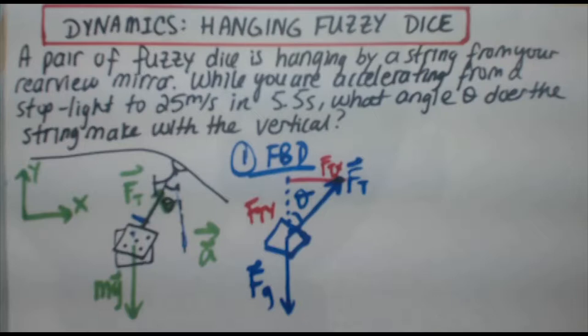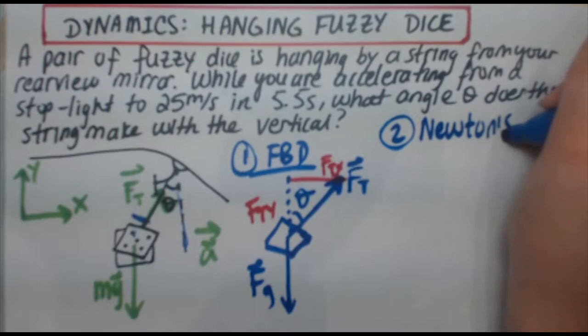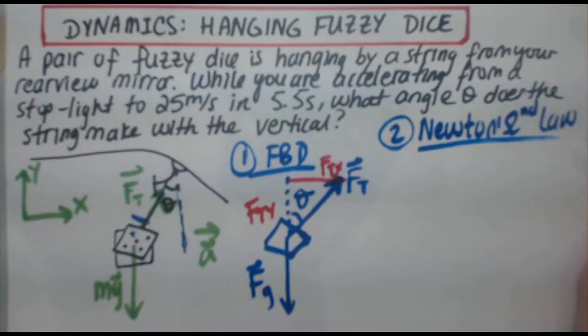So there's actually a common way to solve a lot of these problems, and that is you always start with Newton's second law after you do your free body diagram. And then you do Newton's second law in both the x direction and the y direction. And you end up with two equations, two unknowns. You sub them into each other and you end up solving for your unknown piece.